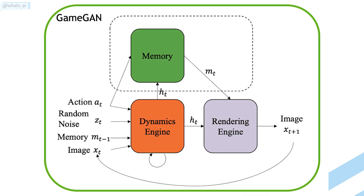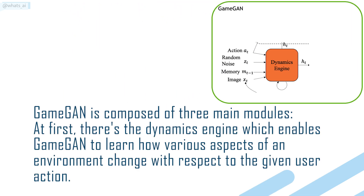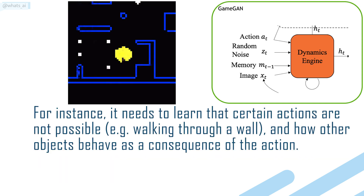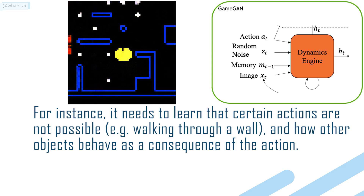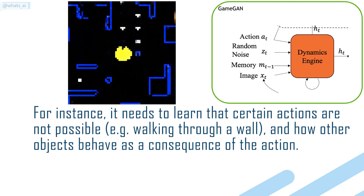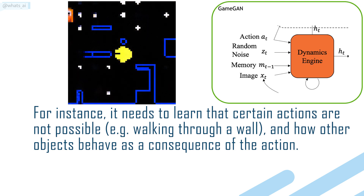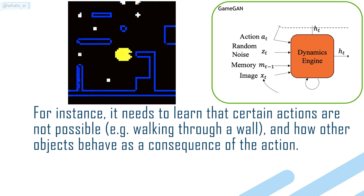GameGAN is composed of three main modules. First, there is the Dynamics Engine, which enables GameGAN to learn how various aspects of an environment change with respect to the given user action. For instance, it needs to learn that certain actions are not possible, like walking through a wall, and how other objects behave as a consequence of the action.